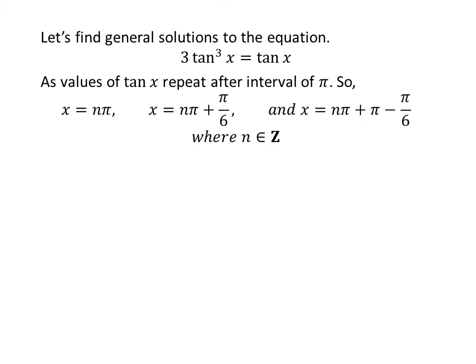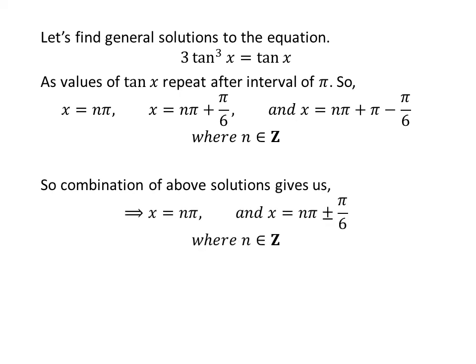Let us find the general solutions. Since the value of tangent of x repeats after an interval of pi, the general solutions are n times pi, n times pi plus pi upon 6, and n times pi plus pi minus pi upon 6, where n is an integer. Combining these, the general solutions are n times pi and n times pi plus and minus pi upon 6.